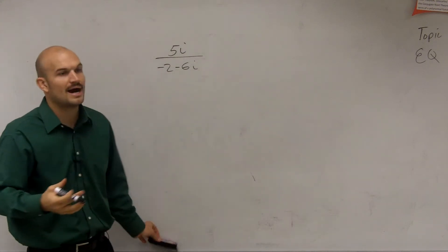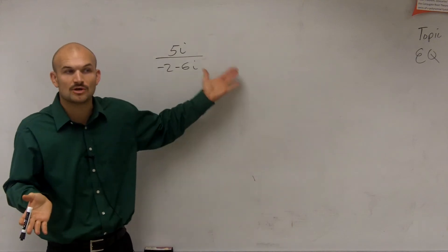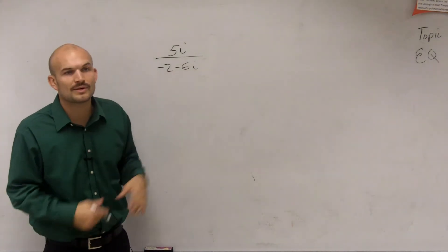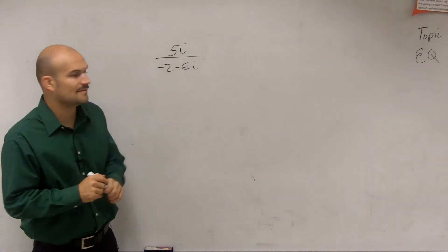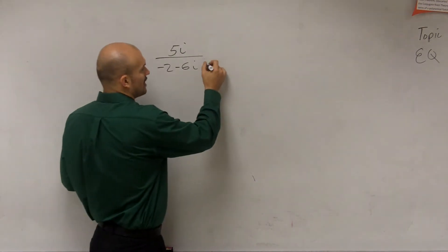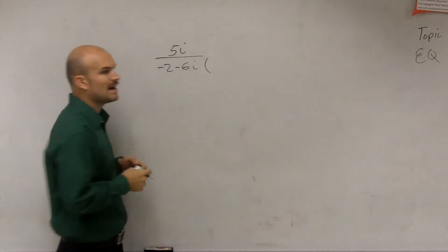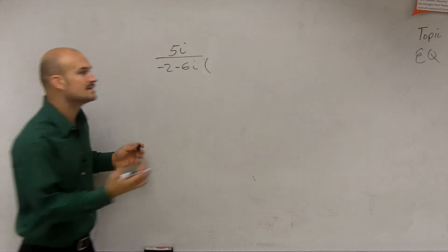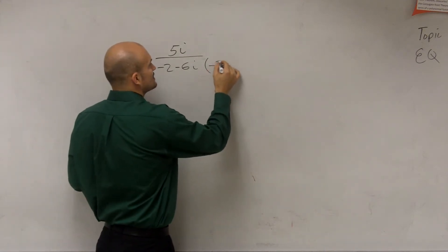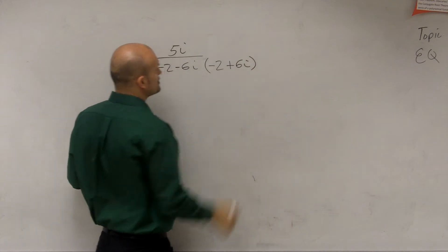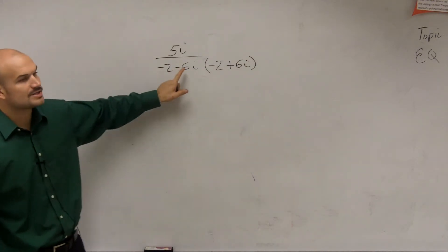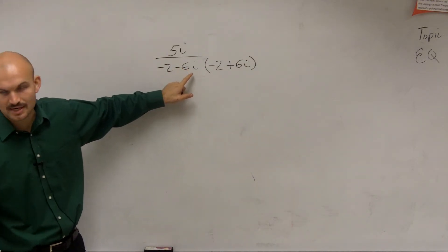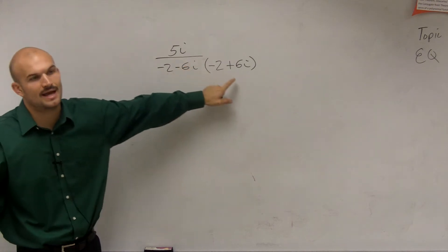So rather than multiplying by i, when I just had the imaginary part, I could just multiply by i. But since I have a real and imaginary part, what I'm going to have to do is multiply by what we call the conjugate. And the conjugate is going to be your exact same binomial, or your complex number, except you're going to just have the opposite operation. So rather than subtracting, we're going to add.